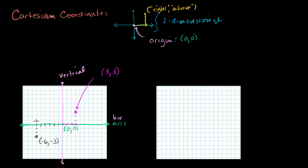Let's do one more point. Say I have that point right there — what's its coordinate? It's 2 to the left, so it's going to be minus 2. And then it's 1, 2, 3, 4 up. So it's going to be minus 2, 4. If you compare it to the axes, on the vertical axis you would have positive 4, and on the horizontal axis you would have minus 2. It's that straightforward.